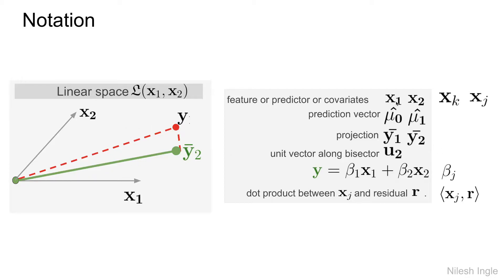Now x1, x2 can be called predictor, feature, or covariates. In generalizing terms, they're also called xk or xj, where k could mean any real number 1, 2, 3, or j could mean 1, 2, 3. These are prediction vectors mu hat 0 and mu hat 1, and we'll see where they come up. Then projections, as we talked about, y bar 1 and y bar 2, those are the projections.